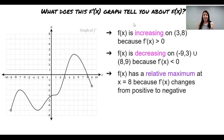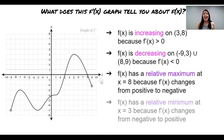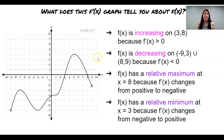f of x has a relative maximum at x equals eight because the f prime of x graph changes from positive to negative, and a relative minimum at x equals three because the f prime of x graph changes from negative to positive. If the graph just touched at eight and bounced back up, we would not have a relative maximum nor a relative minimum, because f prime did not change signs.